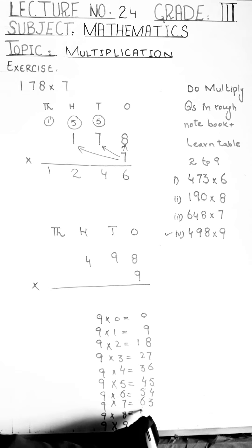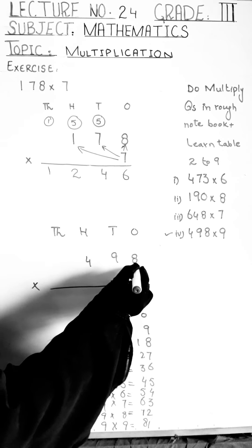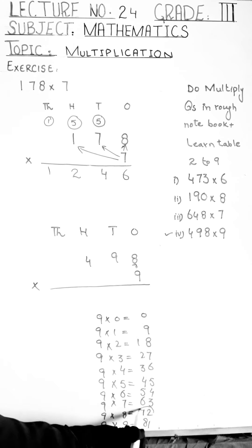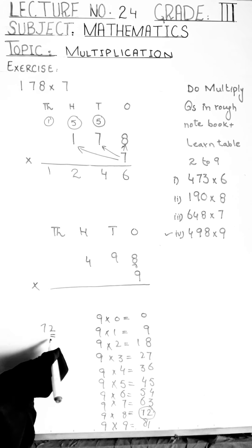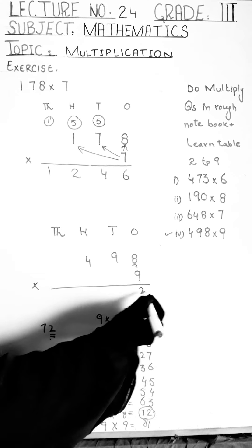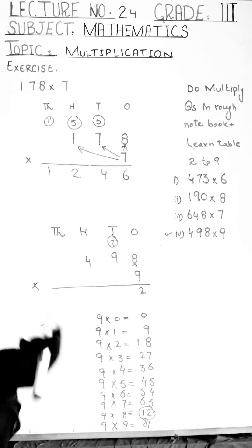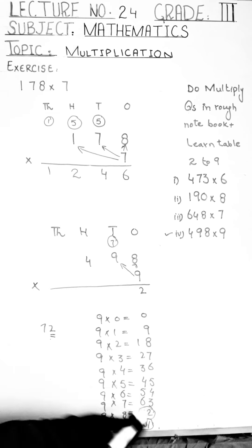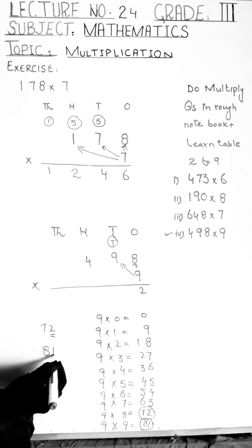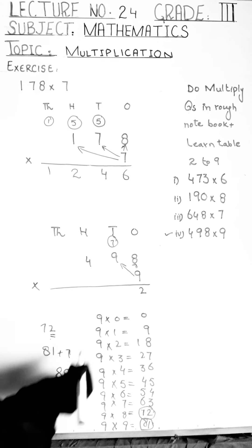First we multiply nine by eight — nine eights are seventy-two. We write the right digit, two, in the ones column and carry the left digit, seven, into the tens column. Well done, students. Now we read the table of nine up to nine — nine nines are eighty-one. The carry digit is seven, so we add seven to eighty-one: the answer is eighty-eight. We write eight in the tens column and carry eight into the hundreds column.